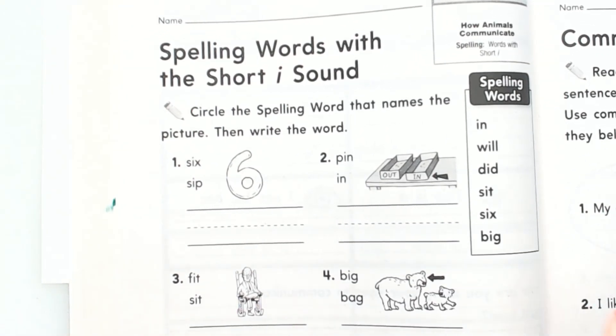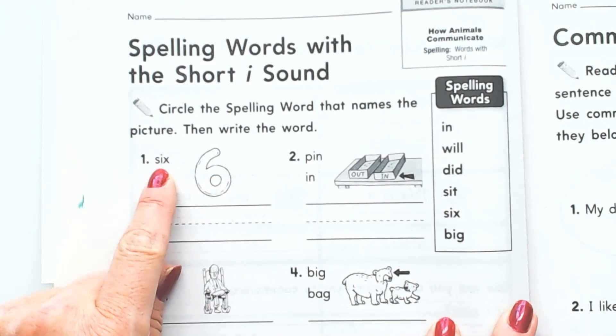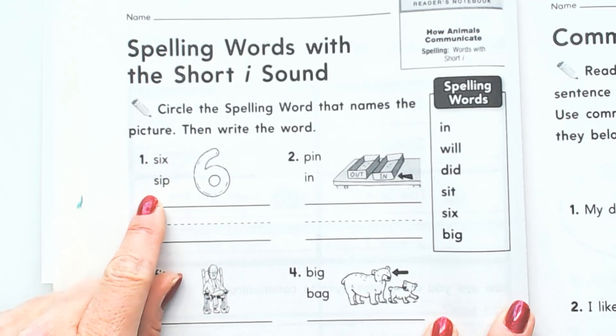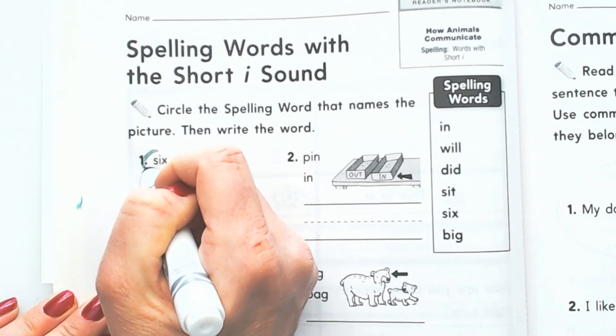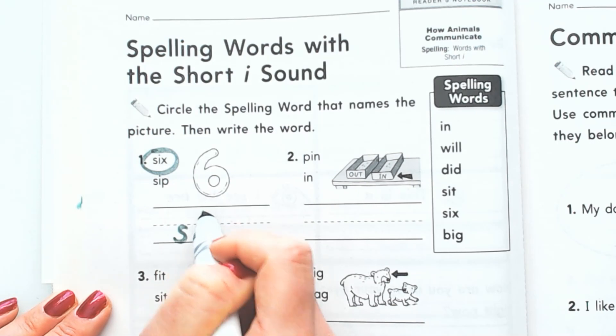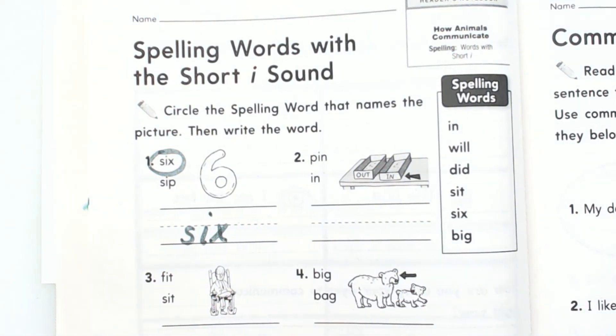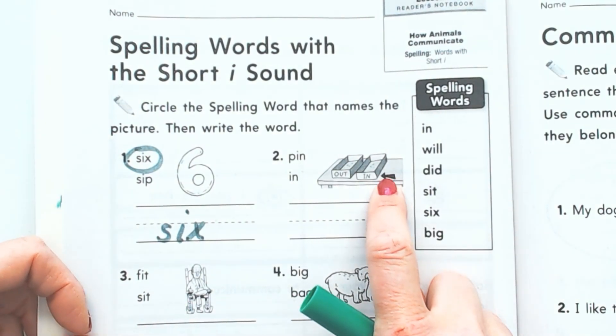This is the number six, right? So we have to read both of these to see how to spell 'six.' All the way to the end, 'six, six.' It's going to be that one, not 'sip.' So I'm gonna circle it. That's my spelling word. I'm gonna spell it just like I'm gonna spell it on the spelling test tomorrow.